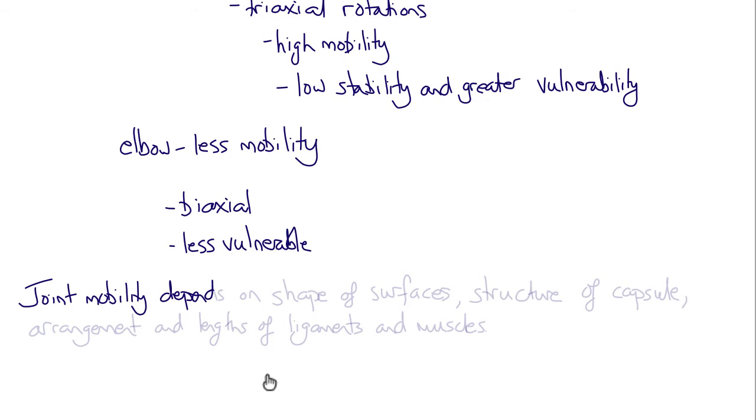Joint mobility depends on the nature and shape of the articulating surfaces, the structure of the capsular ligament, and the lengths and arrangements of the ligaments and muscles surrounding the joint.